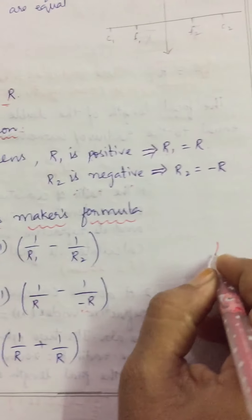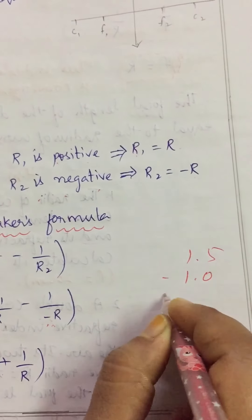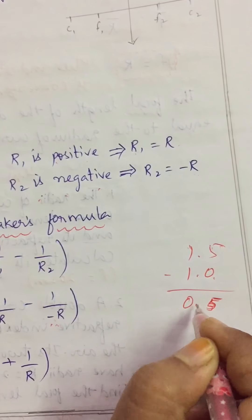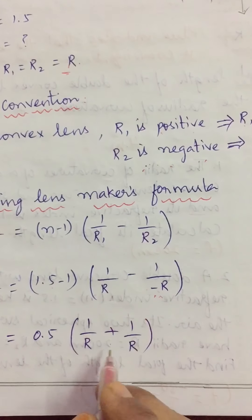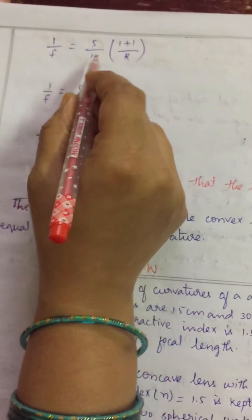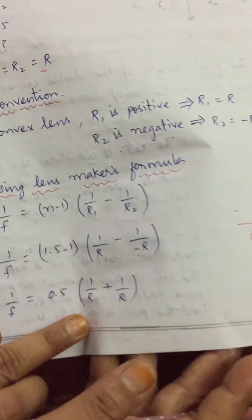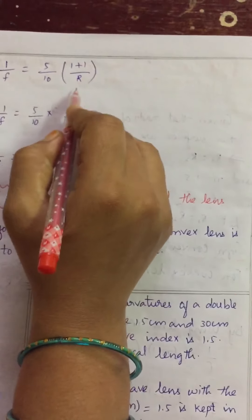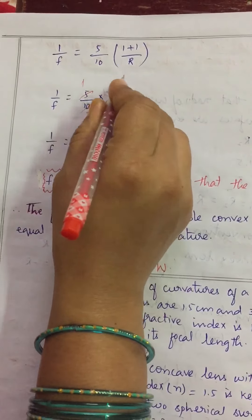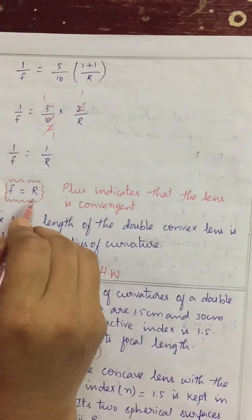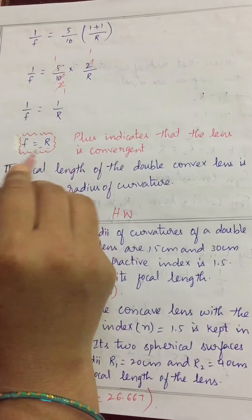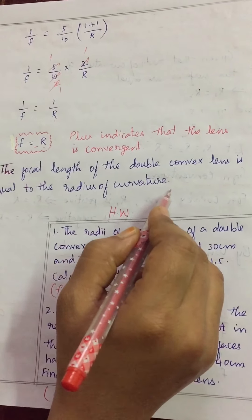Since both denominators are the same R, we add the numerators directly: 1 + 1 = 2. So 1/f = (5/10) × (2/R) = 10/10R = 1/R. Taking the reciprocal, f = R. The positive sign indicates that the lens is convergent, which means it is a convex lens. The focal length equals the radius of curvature R.